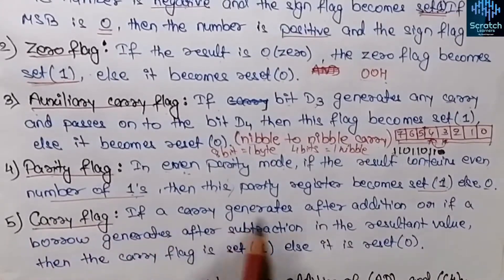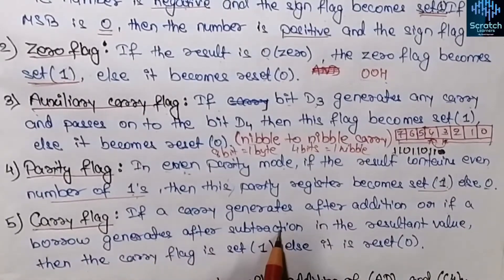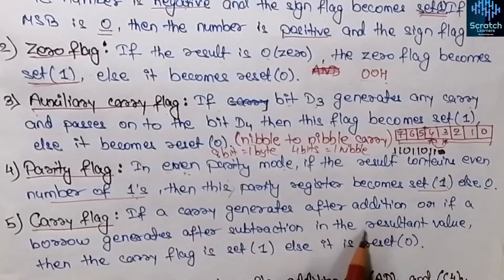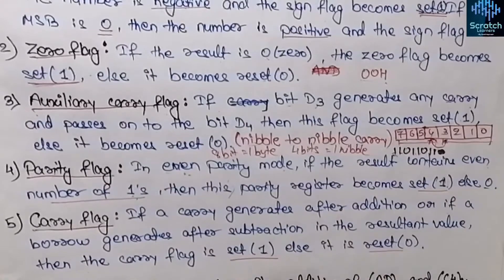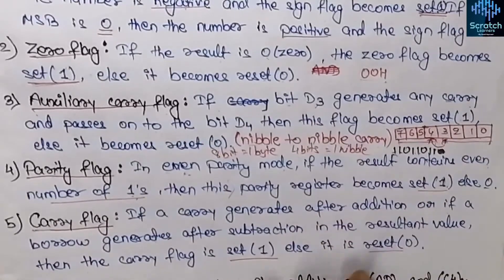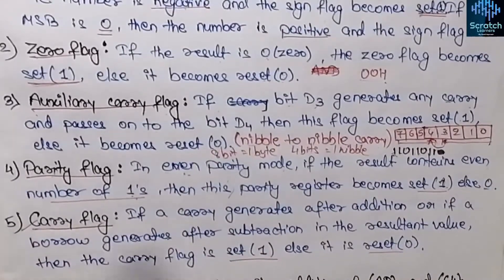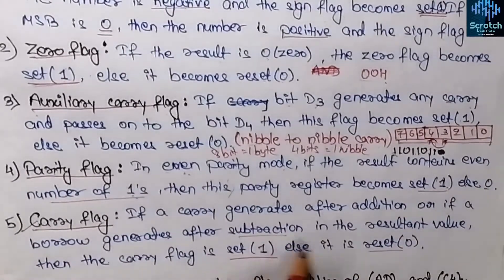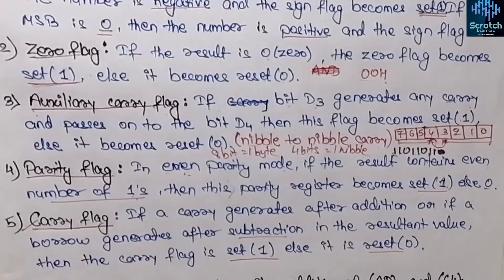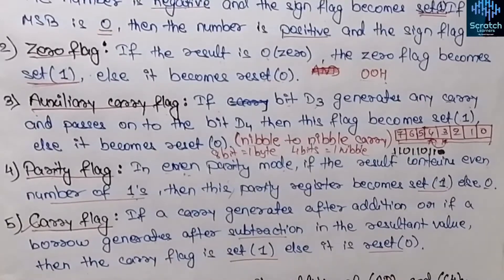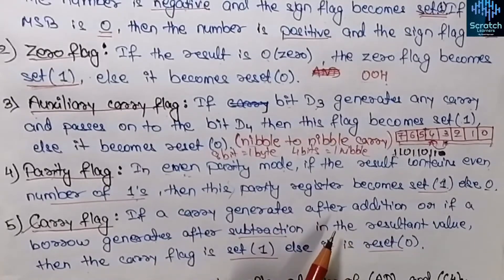The last flag is the carry flag. If a carry is generated after addition or a borrow is generated after subtraction, the carry flag is set to 1; otherwise it is reset to 0. In the case of addition, if adding two numbers generates a carry, the carry flag is set. In the case of subtraction, if a borrow is generated, the carry flag is also set to 1.